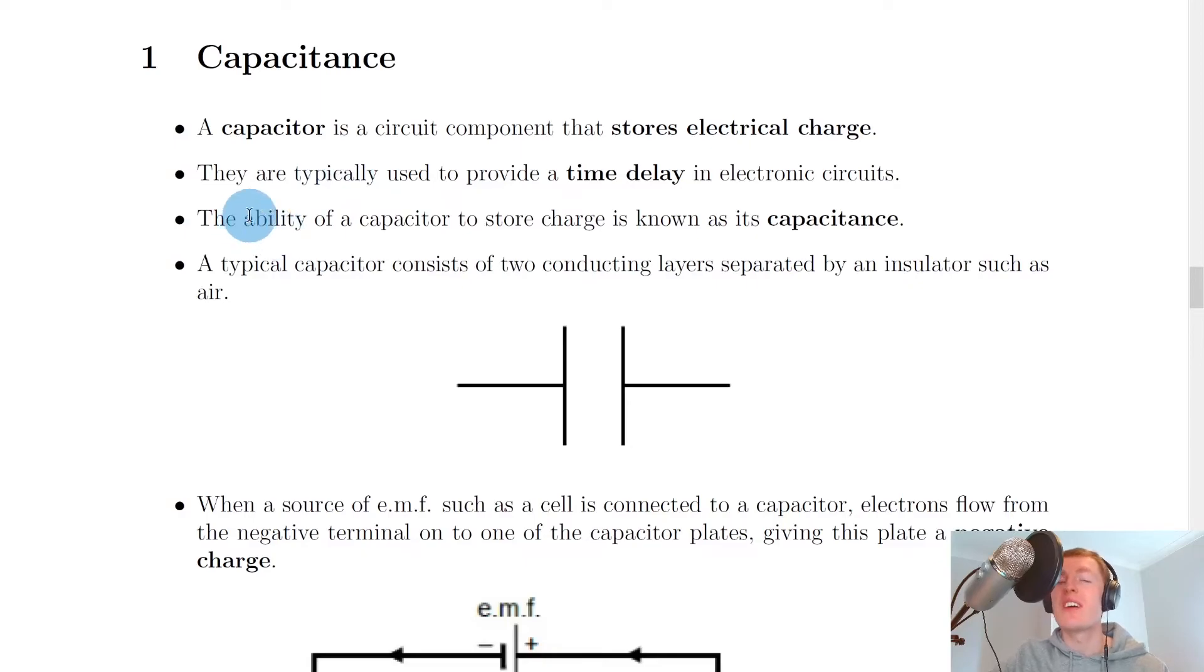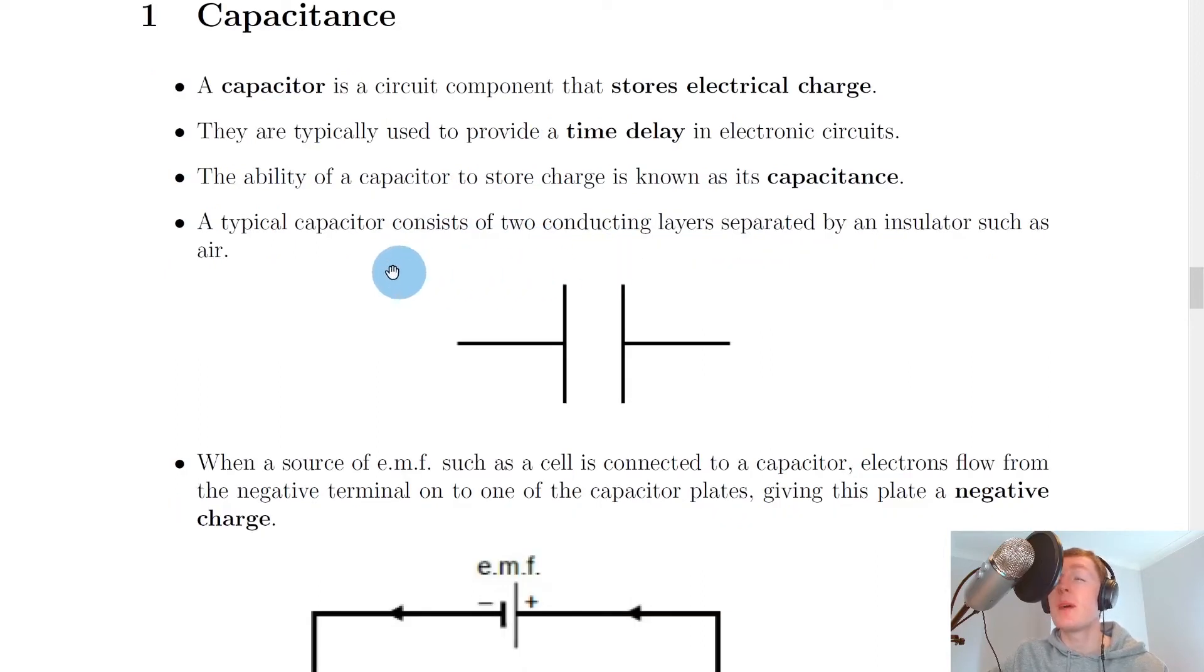We'll start by looking at what a capacitor actually is. A capacitor is a circuit component that stores electrical charge. You might remember from National 5 Physics that a capacitor will also store energy. They are typically used to provide a time delay in electronic circuits. The ability of a capacitor to store charge is known as its capacitance. A typical capacitor consists of two conducting layers separated by an insulator, such as air, as shown in this circuit diagram here.